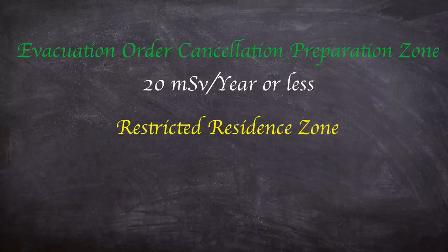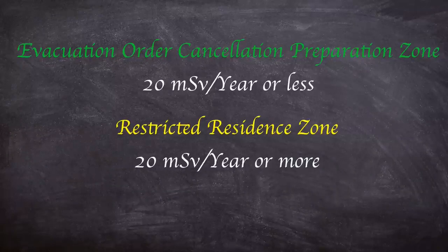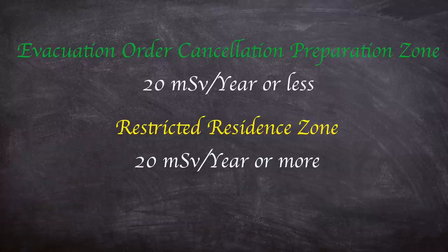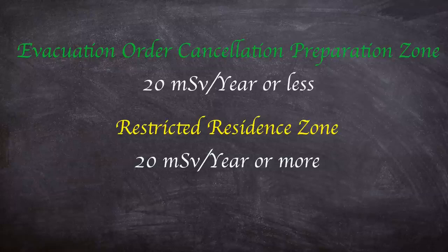Area 2 is where residents are not permitted to live, known as the Restrictive Residence Zone. Areas where the annual integral dose of radiation is expected to be 20 millisieverts a year or more and where residents are ordered to remain evacuated in order to reduce the risk of radiation exposure. Residents can also return to this area but not stay the night as well.